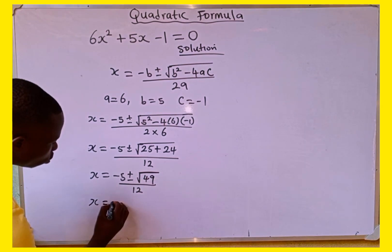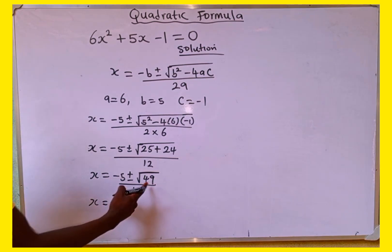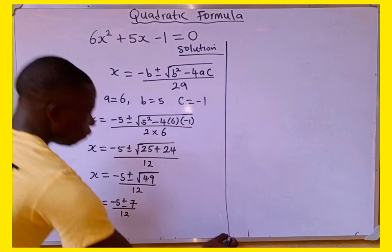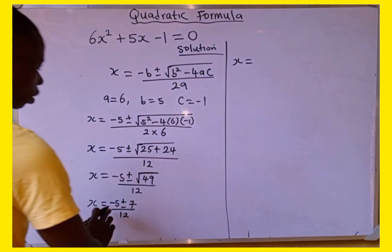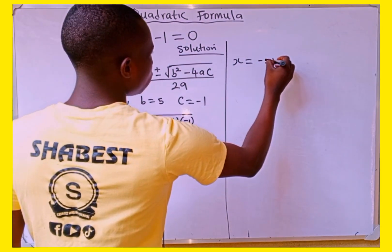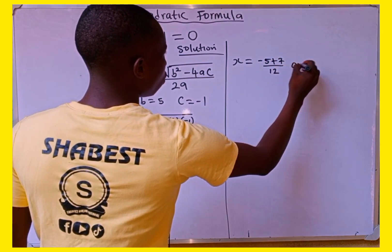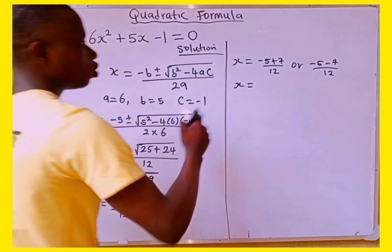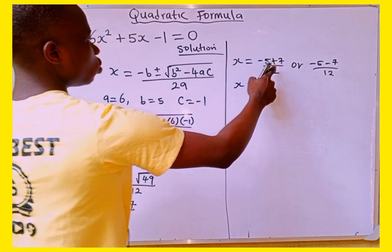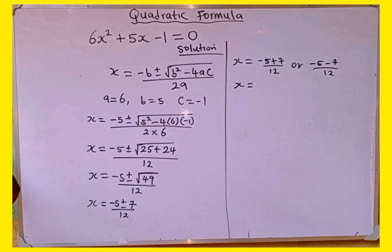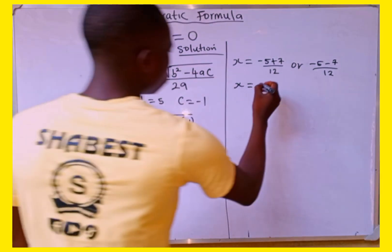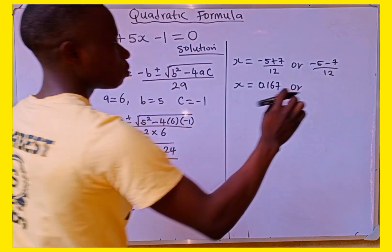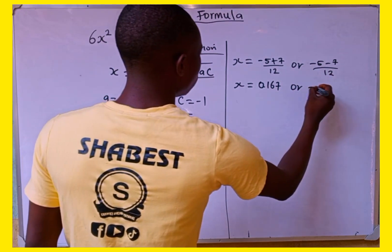So x equals negative 5 plus or minus the square root of 49, which is 7, all over 12. To get the values of x: x equals negative 5 plus 7 over 12, or negative 5 minus 7 over 12. That gives us 2 over 12, which is approximately 0.167, or negative 12 divided by 12, which gives us negative 1.